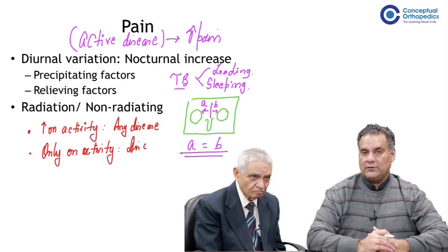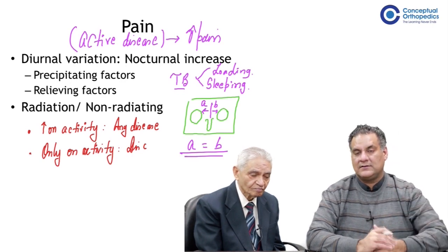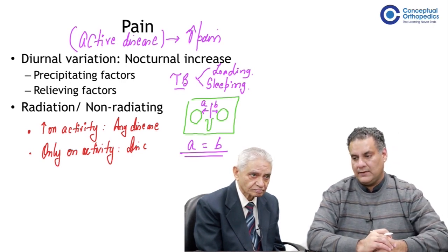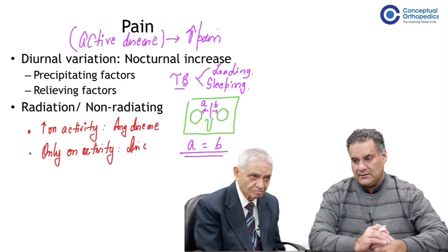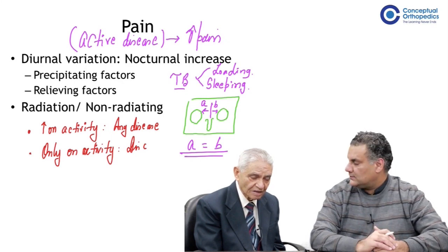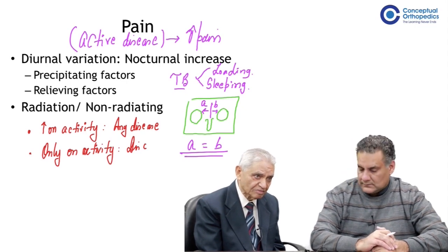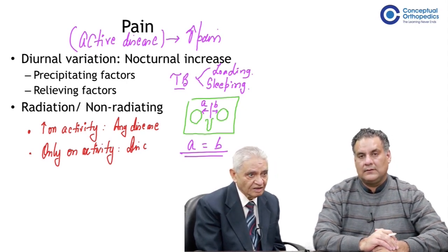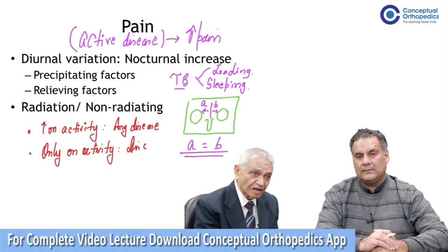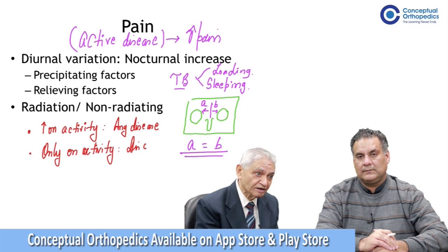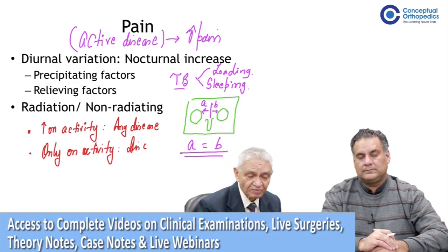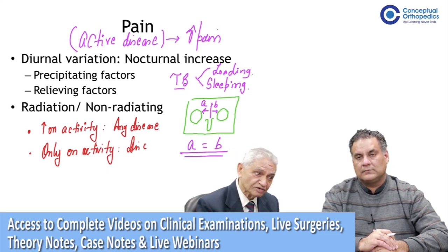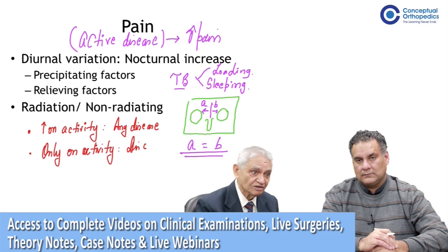The second important feature to talk about is the radiation of pain. Non-radiation is more related to disc prolapse. Tubercular presentation can have radiation, but rarely. It can radiate to the lower limbs or even upper limbs for cervical spine — brachialgia or sciatica — even without disc involvement.